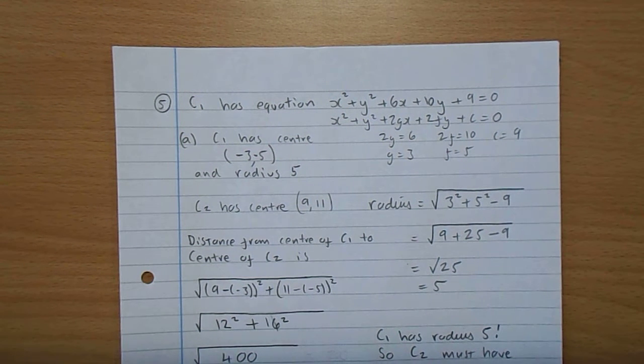This is the Higher 2015 paper 2, question 5. Circle C1 has equation x squared plus y squared plus 6x plus 10y plus 9 equals 0 and the centre